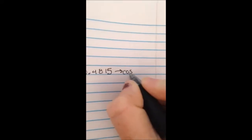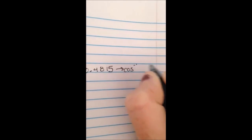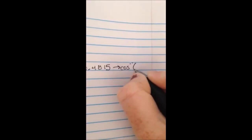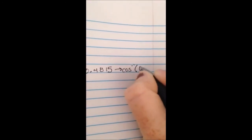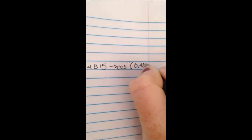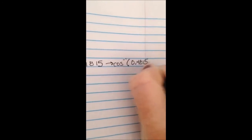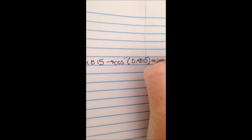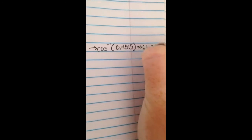Since you now only have a decimal, to find the angle value you're going to use cosine to the negative 1. When that's plugged in, A is approximately 61.2 degrees.